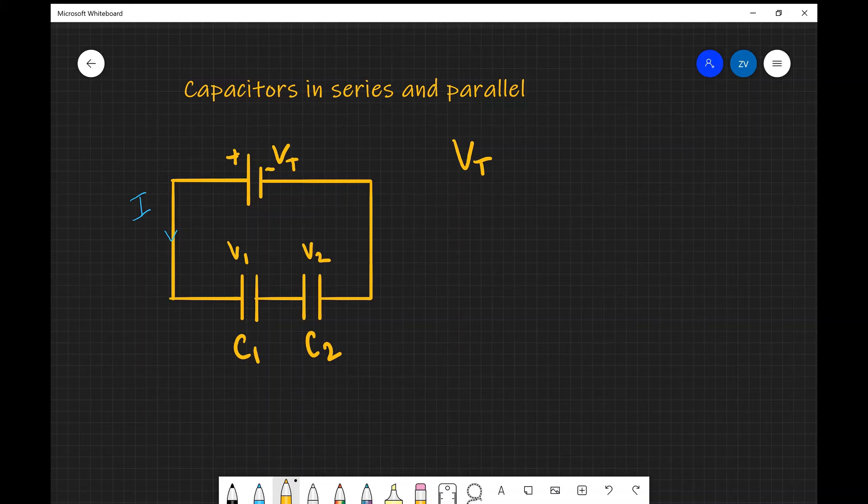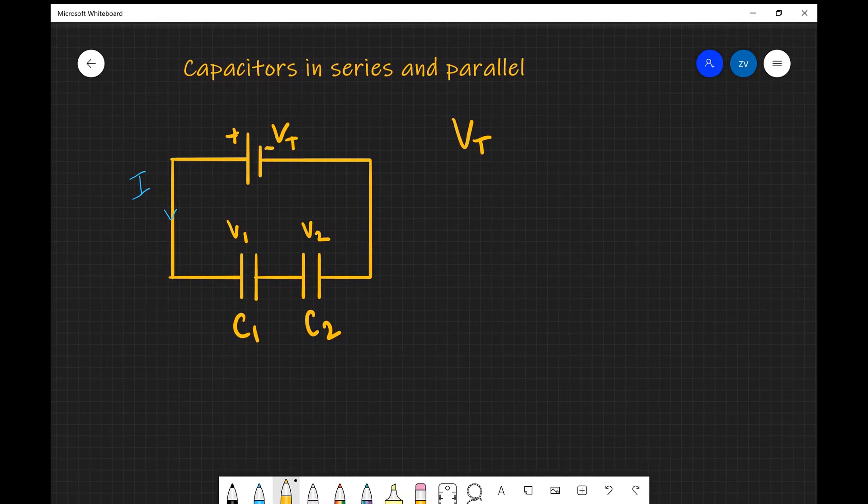Let's have a look at how these two formulas are derived. First of all, we're going to start off with capacitors in series. In order to derive this formula, we're just going to imagine a pretty simple circuit in which we have a cell which is producing an EMF, which we've called V total, and that is distributed across two capacitors.